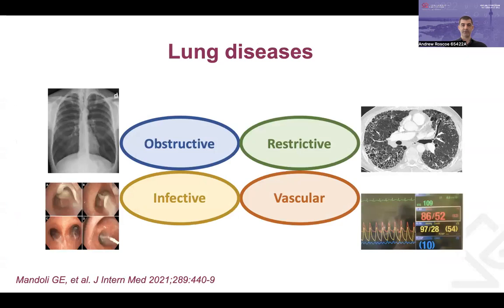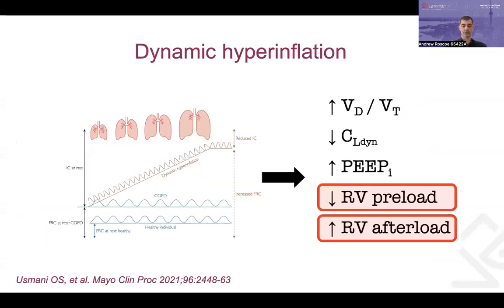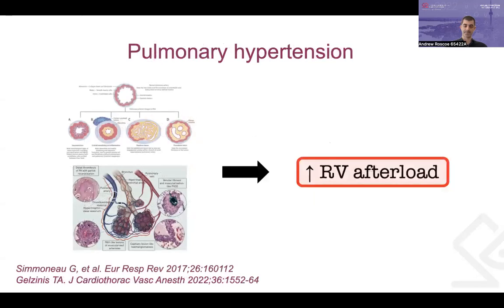Lung diseases can generally be divided into four main categories depending on the underlying pathology. With obstructive pathophysiology such as end-stage emphysema, we typically get dynamic hyperinflation which increases intrathoracic pressure, resulting in reduced preload to the right side of the heart. As the disease progresses, we eventually get an increase in RV afterload. The other types of lung disease typically affect the heart by increasing RV afterload — pulmonary vascular resistance and pulmonary hypertension.